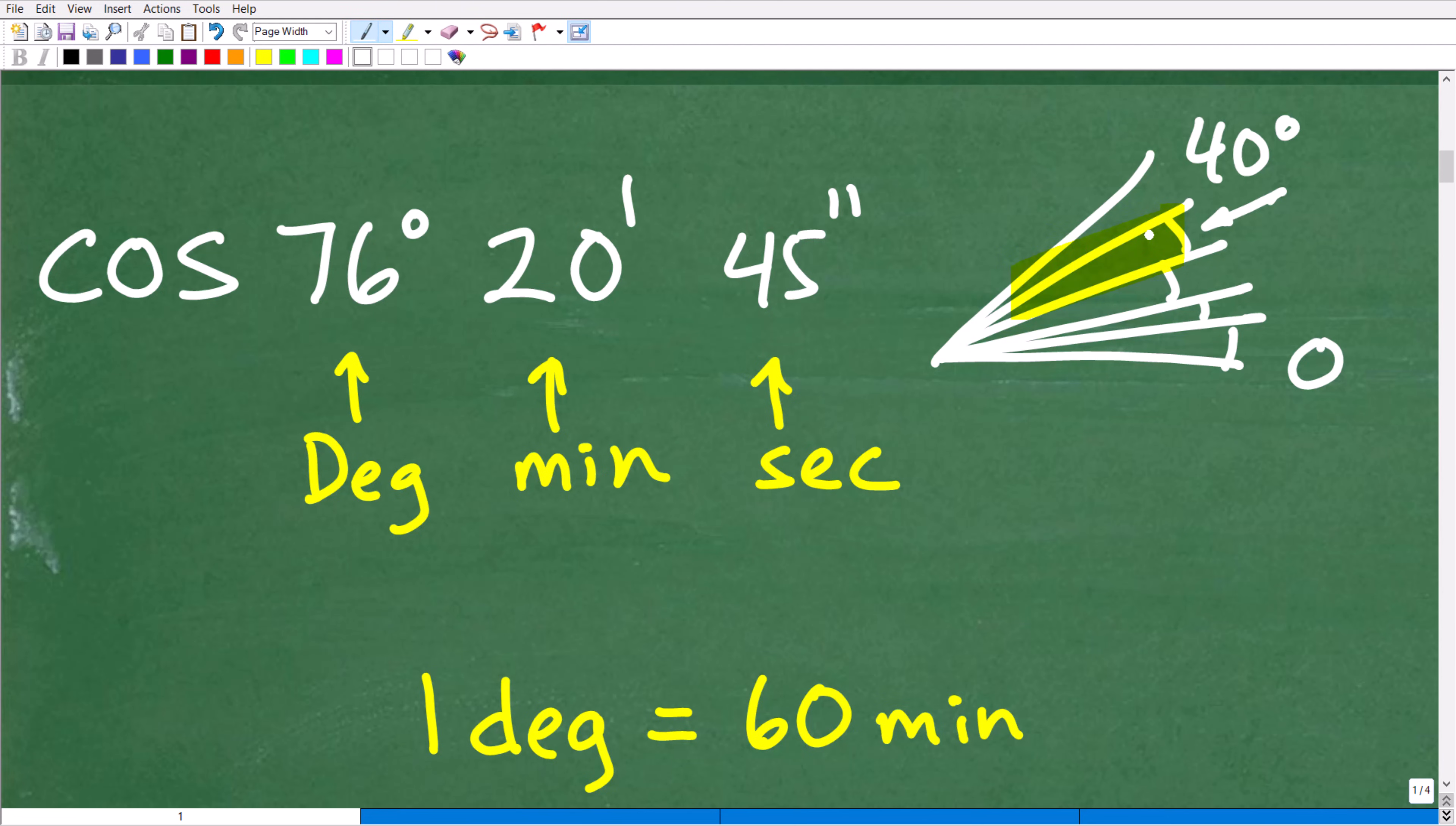So the way we do that is using degrees, minutes, and seconds. So within one degree, there is 60 minutes. We're really thinking about time here. And then within one minute, there are 60 seconds.